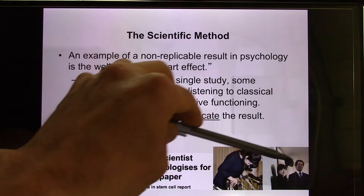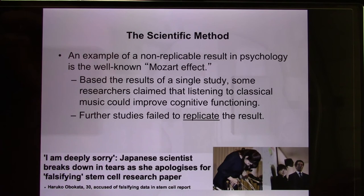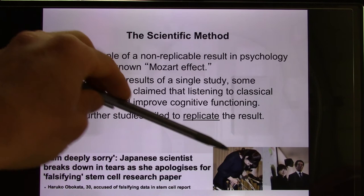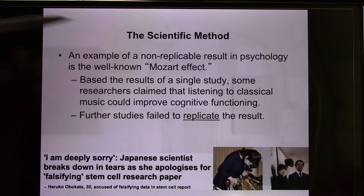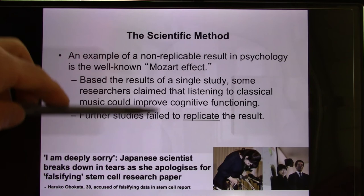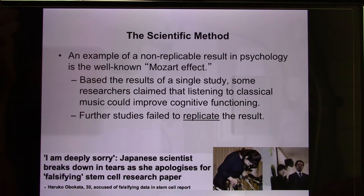Also, there was her mentor, who committed suicide. When something happened, people started digging into his private life and found he had an affair — that's why he committed suicide. So there's a Mozart effect: your data need to be able to be replicated by others. If not, we have a Mozart effect.